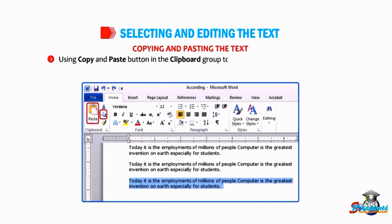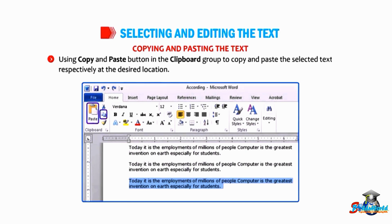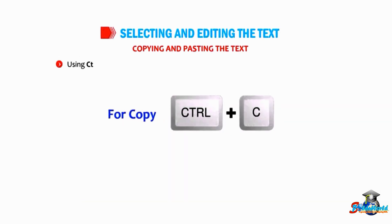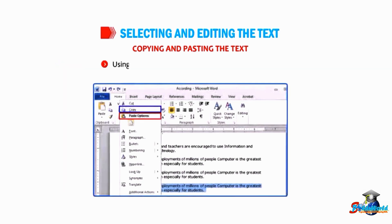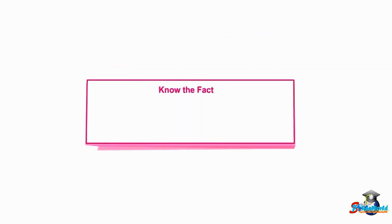The three ways are: using the Copy and Paste buttons in the Clipboard group to copy and paste the selected text at the desired location; using Ctrl+C and Ctrl+V key combinations to copy and paste the text respectively; and using the Copy and Paste option from the context menu.